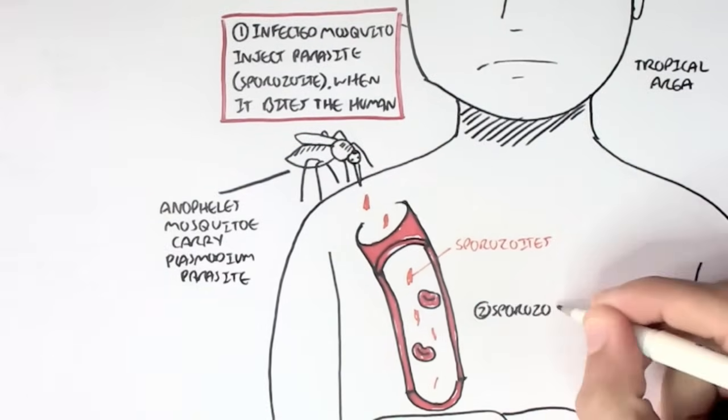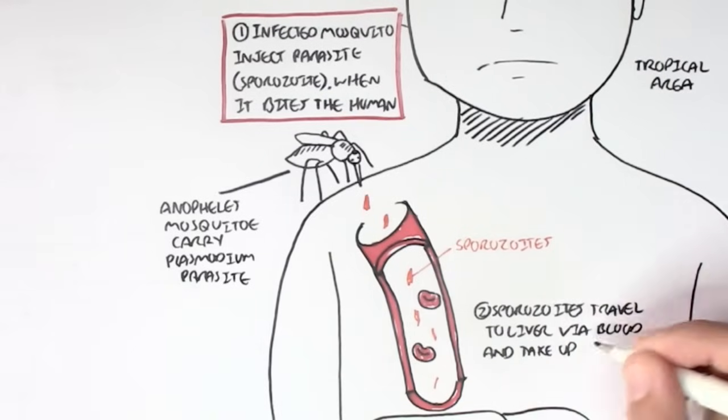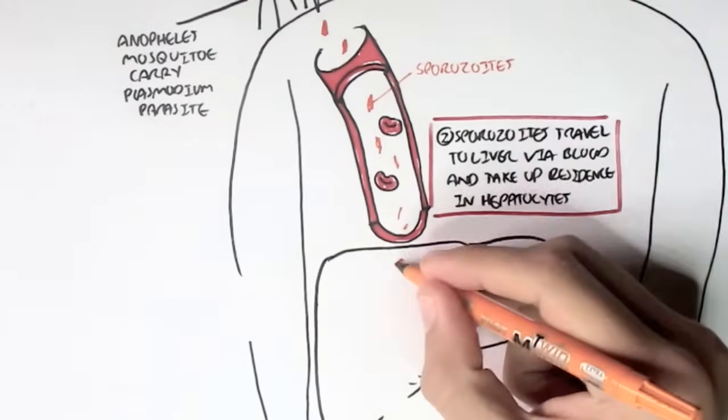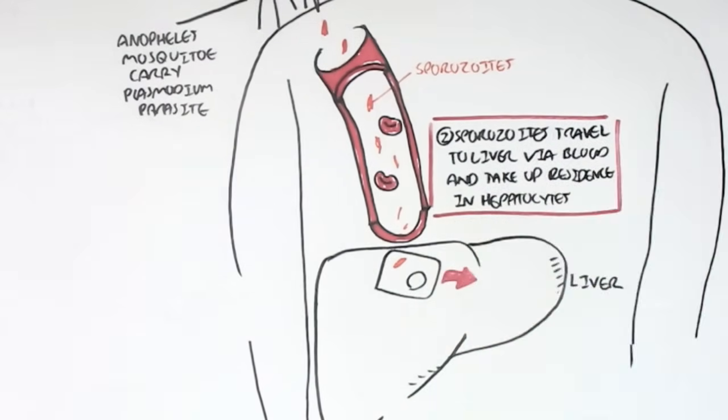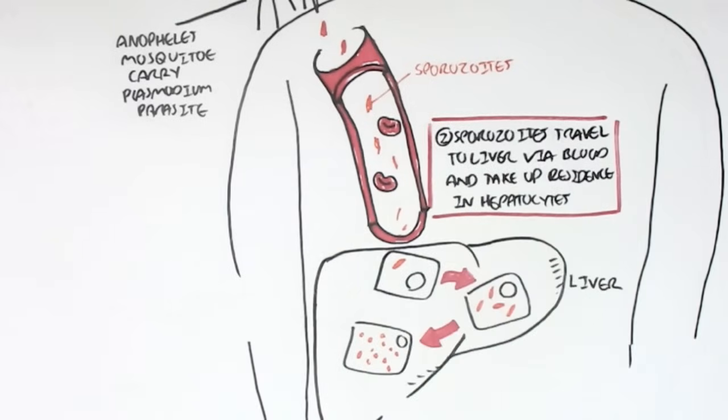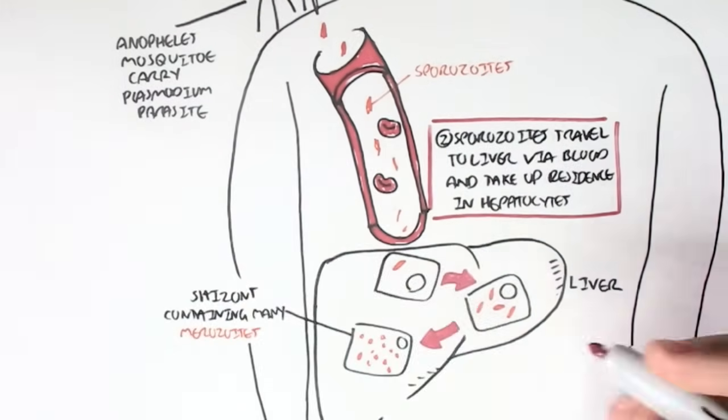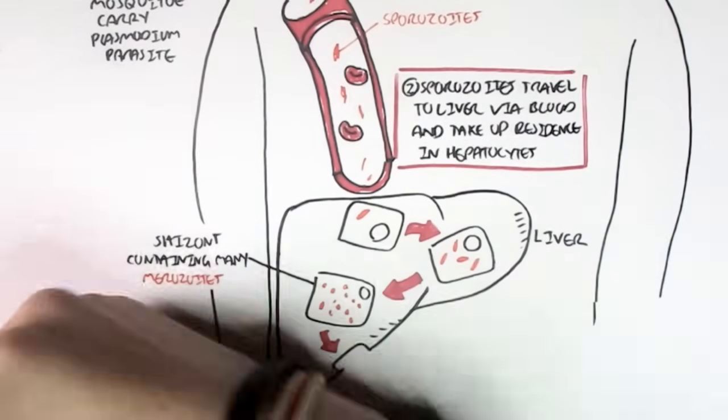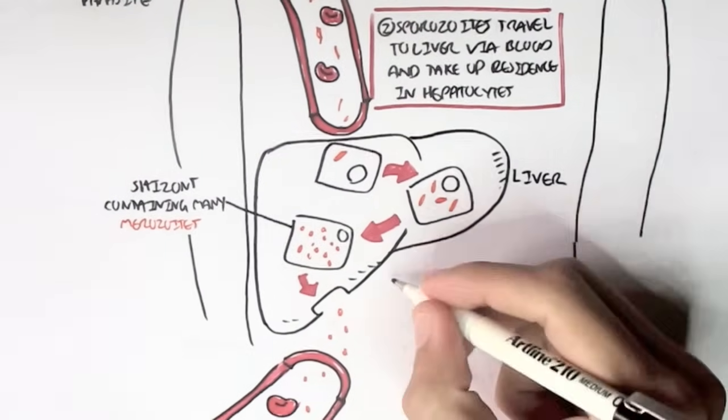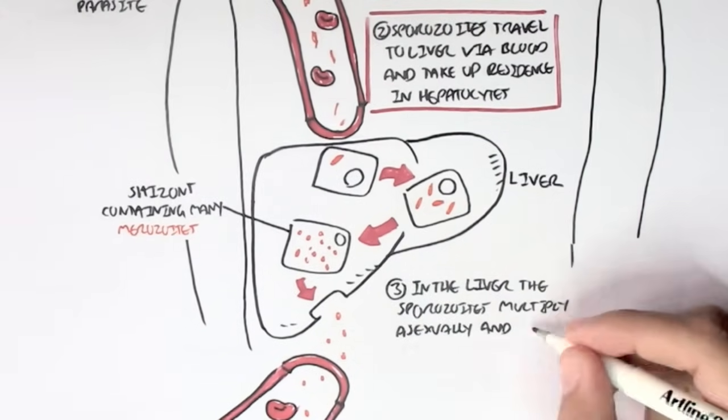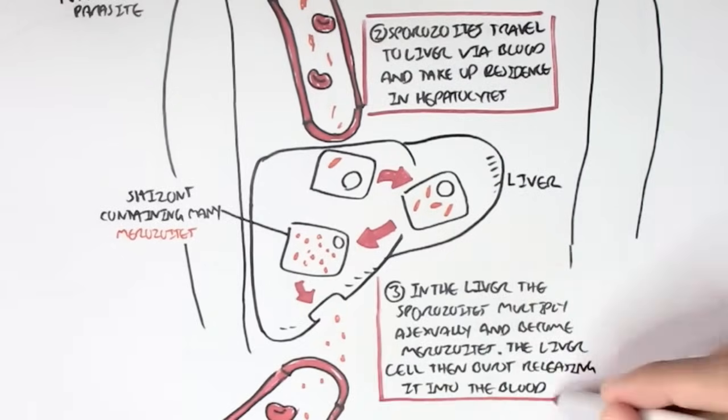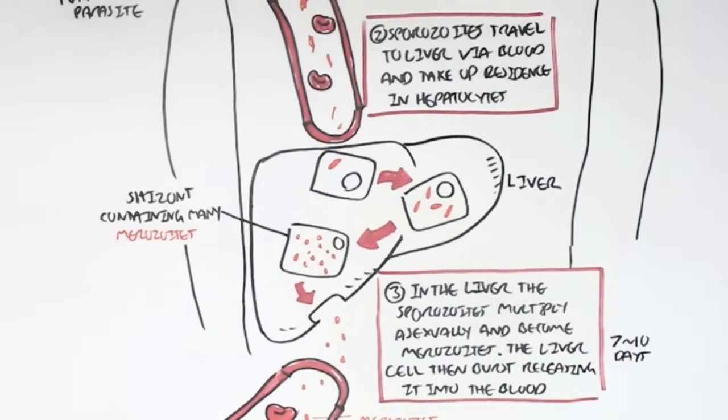The sporozoite travels to the liver via the blood and will take up residence in the hepatocytes, which are the liver cells. So, here the sporozoite will take up residence in the hepatocytes. The sporozoite will begin multiplying asexually to form many merozoites. If there are many merozoites, this is collectively known as a schizont. All these merozoites are then released by the hepatocytes back into the bloodstream by rupturing the hepatocyte itself. So, let's just recap what happened. In the liver, the sporozoites will multiply asexually and become heaps of merozoites. The liver cells will then burst, releasing these merozoites into the bloodstream. And this occurs about 7 to 10 days later.